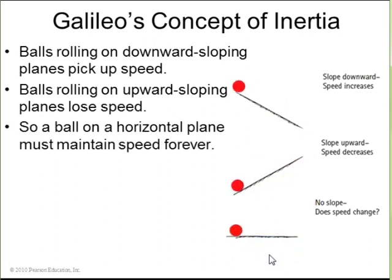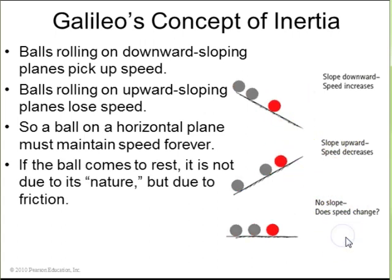The speed starts off high and then gets slower and slower. So Galileo reasoned correctly that if he had a horizontal plane and he started a ball with some initial velocity, that it should neither speed up nor slow down. So it just should have a constant velocity forever. And he reasoned, again correctly, that if the ball did come to rest on the horizontal plane, it's not due to its nature, it's due to friction.